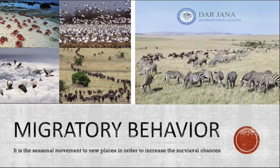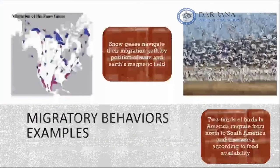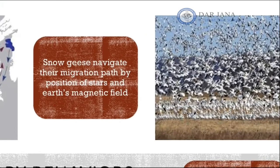Another type of behavior is migratory behavior. Migration is the movement of individuals from one place to another seeking food, water, or mates. Examples include the migration of birds from cold to warm places, or the migration of herds of zebras from arid places to areas where food and water is available.